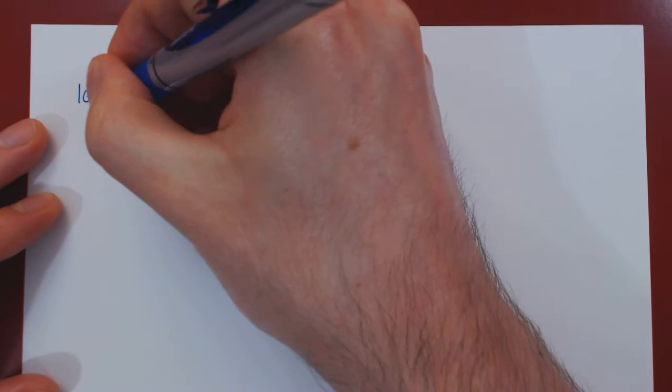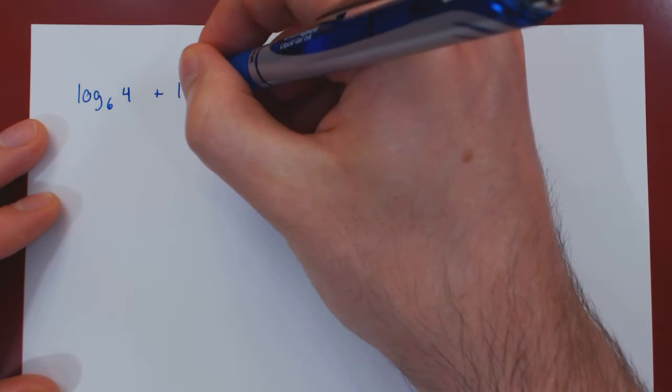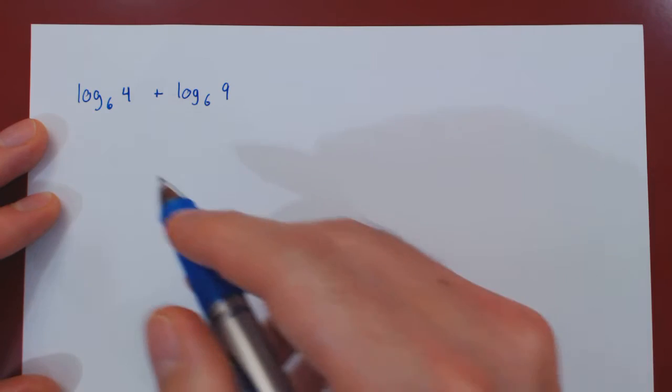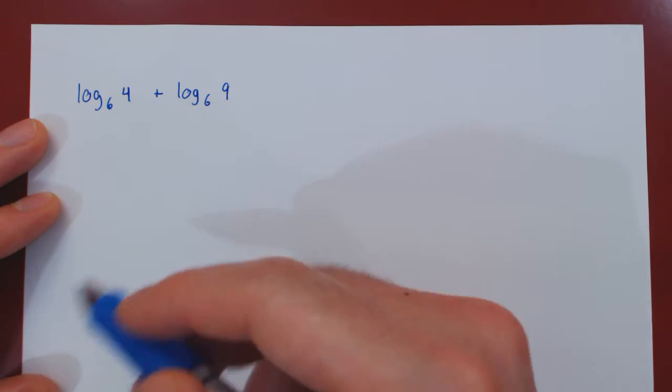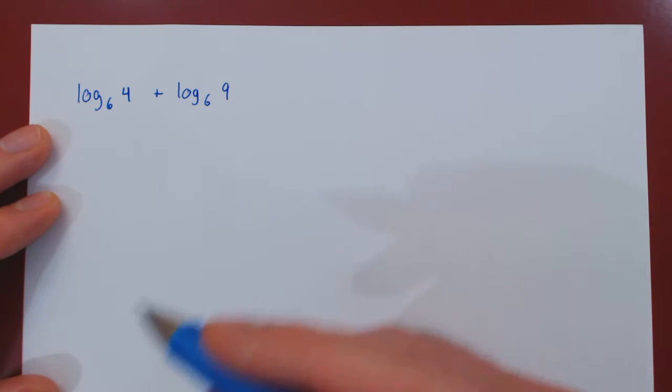The first will be the logarithm base 6 of 4 plus the logarithm base 6 of 9. So what we have here is a sum of logarithms with the same base, and we're going to ask quite simply, can we simplify this expression?